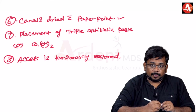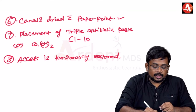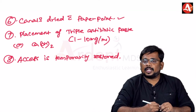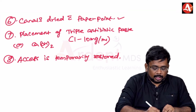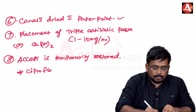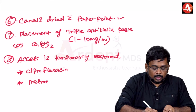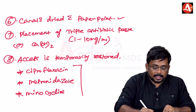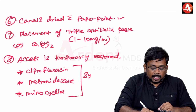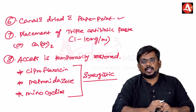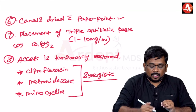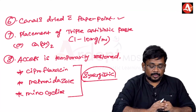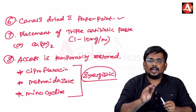After drying the canal with paper points, place triple antibiotic paste at a concentration of 1–10 mg/ml. Triple antibiotic paste consists of: ciprofloxacin, metronidazole, and minocycline. These three antibiotics produce a synergistic effect — their combination is more effective than any single antibiotic used separately. After placement, the access cavity is temporarily closed and the patient is recalled after two to four weeks.